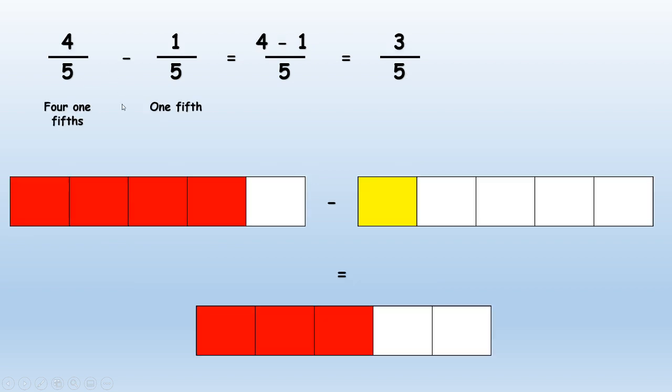Here is an example of subtraction. Four fifths minus one fifth. Again, you copy your denominator and then you subtract four minus one, which are your numerators, which will give you three fifths. And you can see it represented here in these graphs as well. Four fifths minus one fifth equals three fifths.